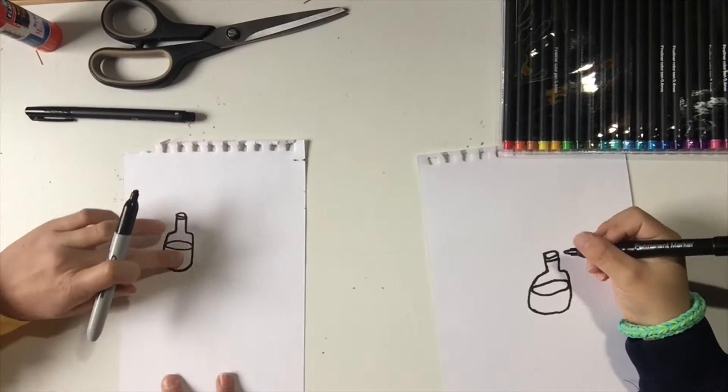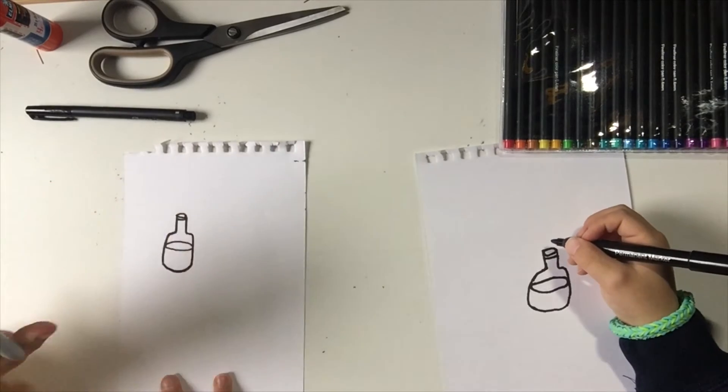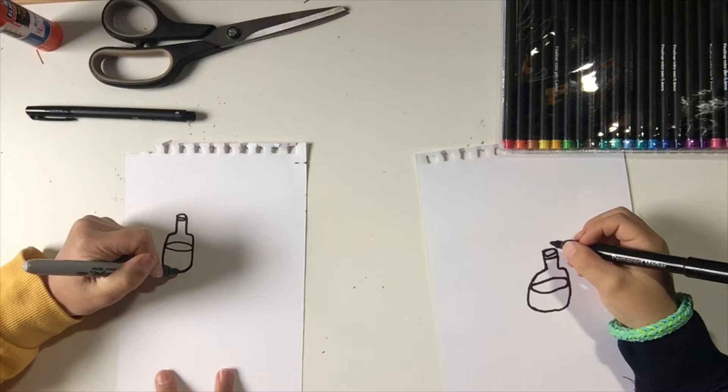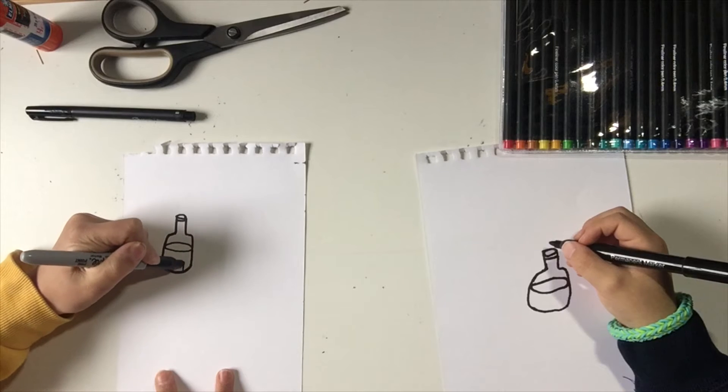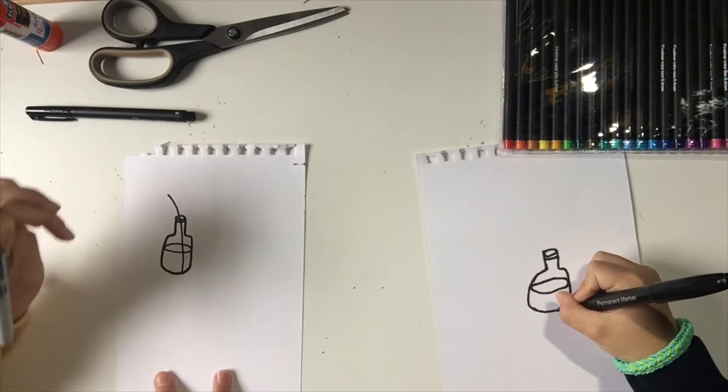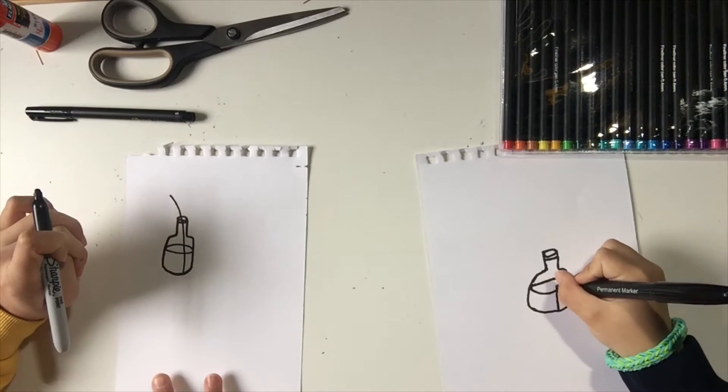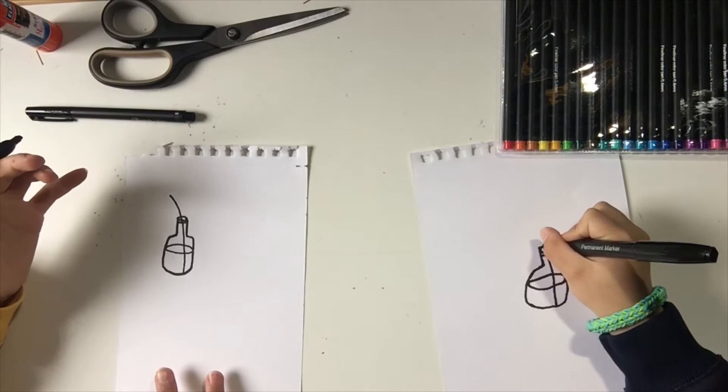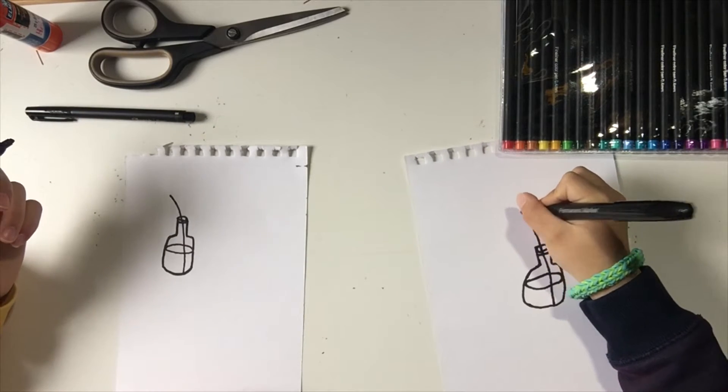And now we're going to draw like the stems of the flowers coming out and the flowers itself. So make sure it starts from the bottom, it touches the bottom and it can curve out. And make sure it's tall enough so you can draw leaves and a flower. And it doesn't have to be the same way as me, you can go any way you want because we're going to just make a whole bunch.